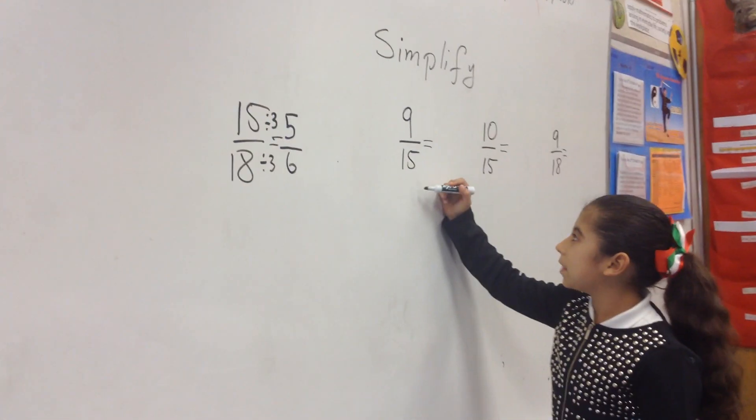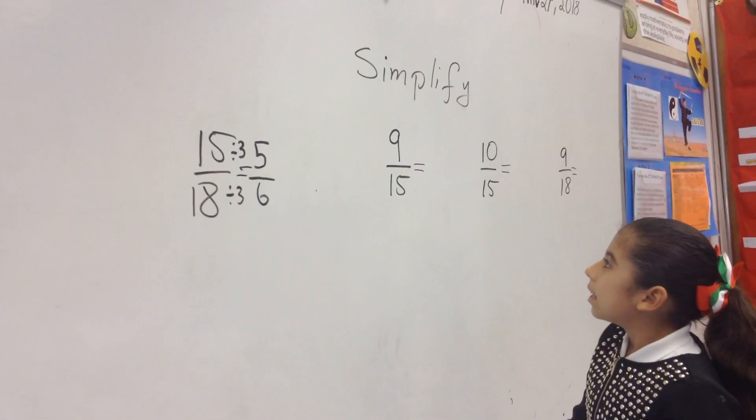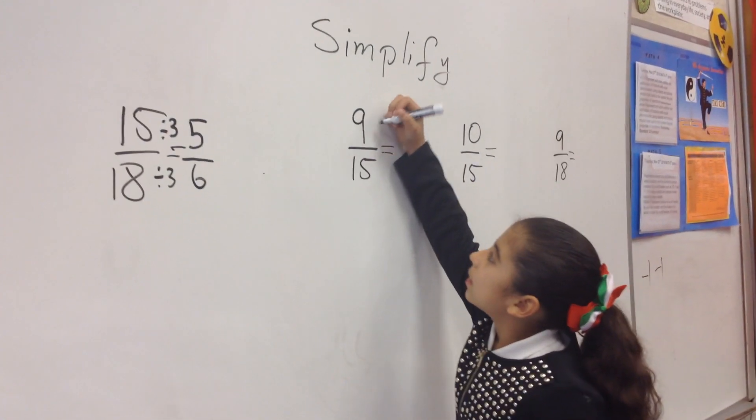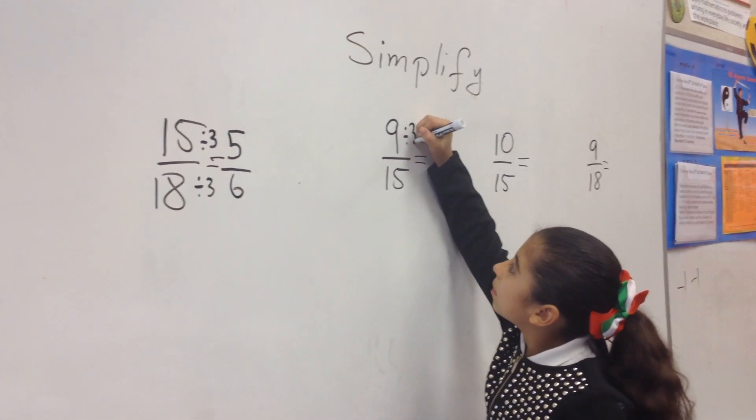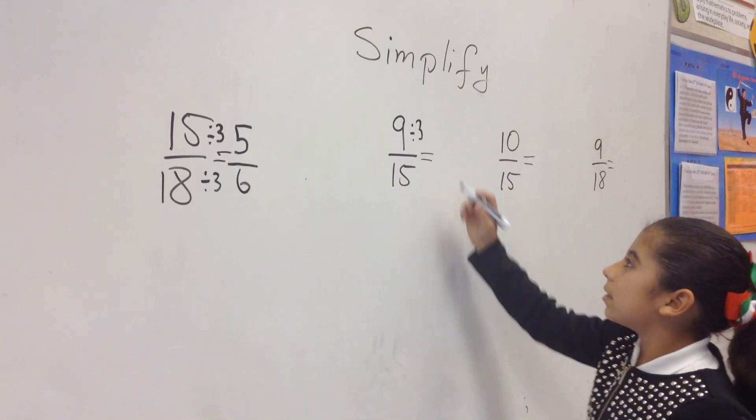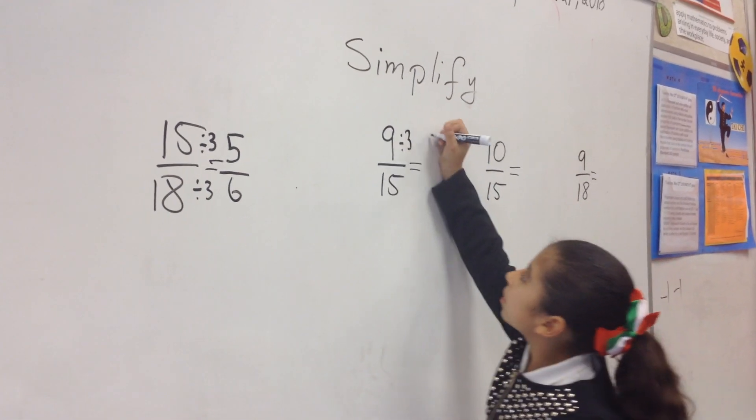Then 9, 15, it goes to something. 9, 18 divided by 3. 9 divided by 3 equals 3.